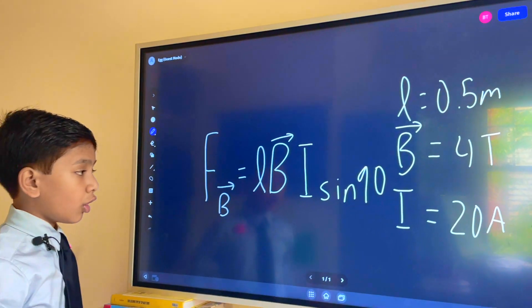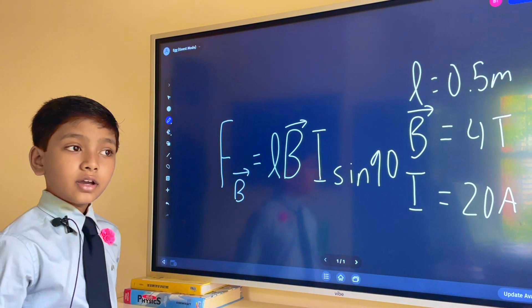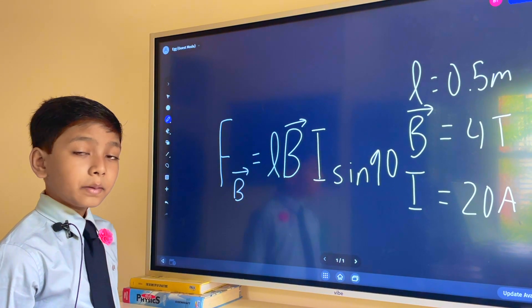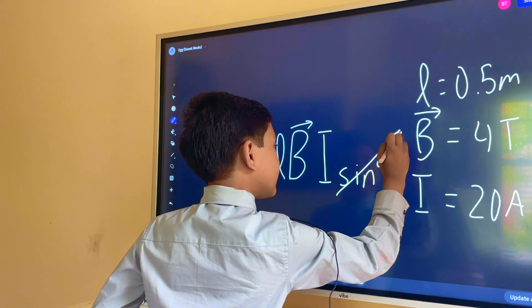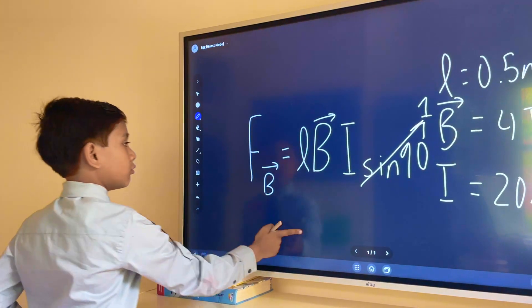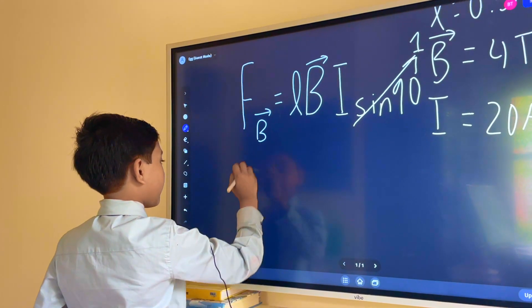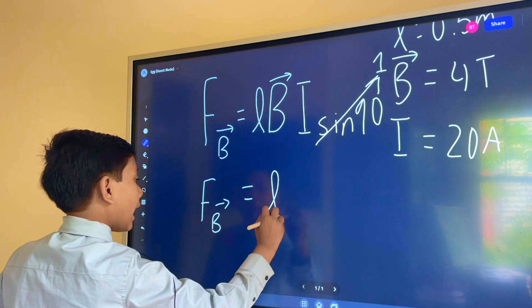Now it will always be 90 because get this, the magnetic field is always perpendicular to the magnetic force. So you don't necessarily need to put this but it's an extra oversight. So this just goes to one giving us FB is equal to LBI.